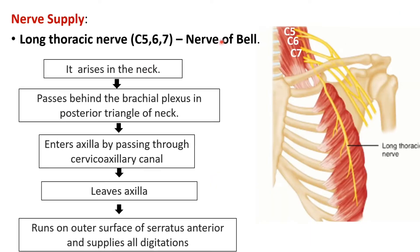The serratus anterior muscle is supplied by the long thoracic nerve, which can be seen here running along the thorax — that is why it is called the long thoracic nerve. Its root value is C5, C6, and C7. It takes origin from the roots of the brachial plexus directly and is also known as the nerve of Bell.